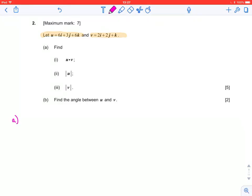So the first thing, we are asked to do u dot v. Remember that what this means is to take each pair of components together, the i's, the j's, and the k's, multiply their magnitudes and then add them together. So u dot v is going to be 6 times 2 plus 3 times 2 plus 6 times 1. Adding those together, we get 24.